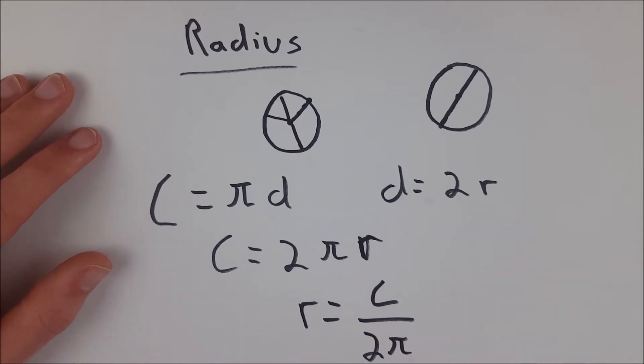So if you know the circumference of a circle and you want to find the radius, you can just take that circumference and divide by 2π.